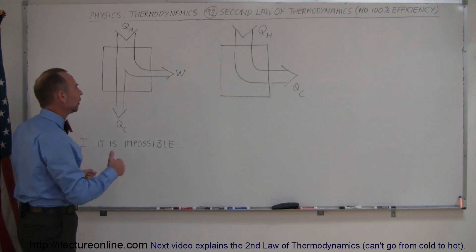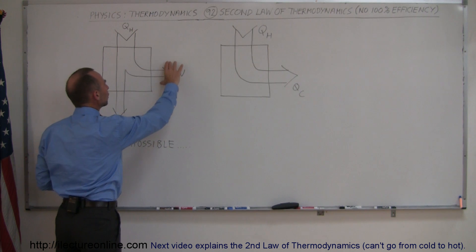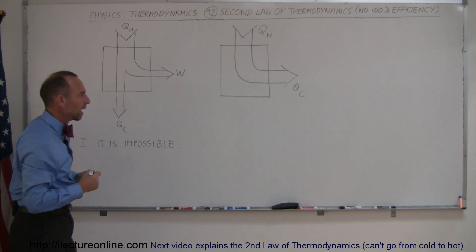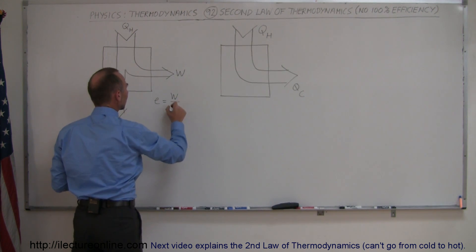As we expressed before, the efficiency of an engine is simply a ratio of how much work we can do relative to the amount of heat that we extract. So again, we can write that the efficiency is simply equal to work divided by Q hot.